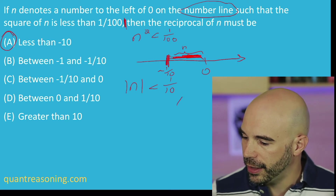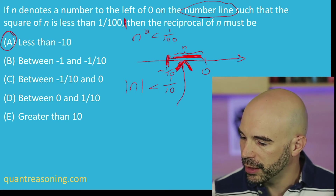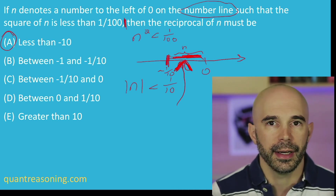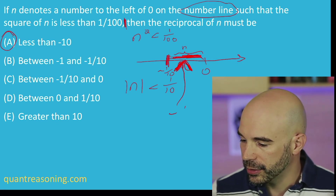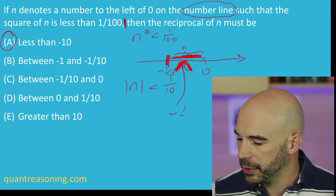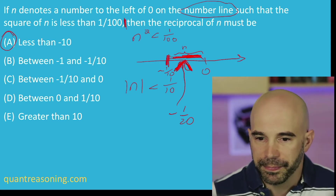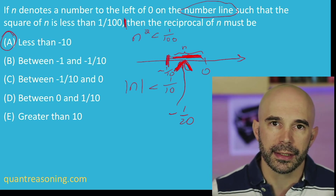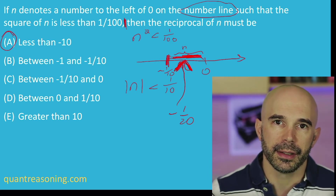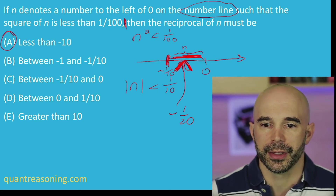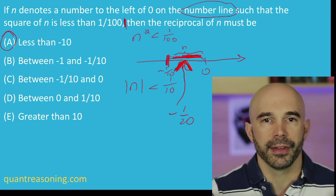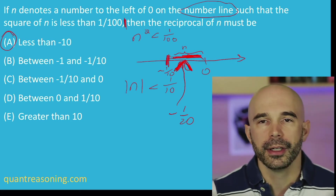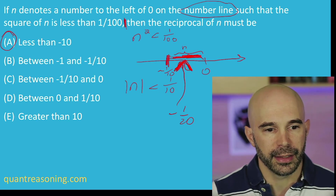You could think of any number inside that range. What's a number that's in between negative 1 tenth and zero? Minus 1 over 12 — yes, so minus 1 over 12 is great. Personally, I would have thought of minus 1 over 20. You take the reciprocal of that and ask, which of these answer choices would that reciprocal live in? The answer would be A. Whether you took negative 1 over 12, it would be negative 12; if you took negative 1 over 20, it would be negative 20. Either way, you're to the left of negative 10. And that's how you can get the answer.